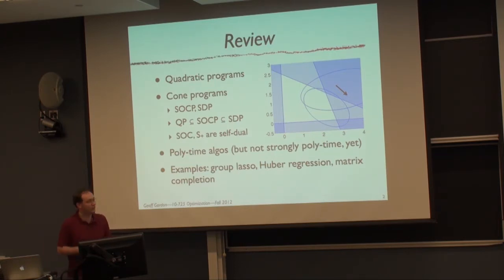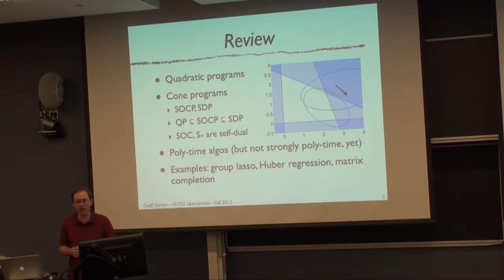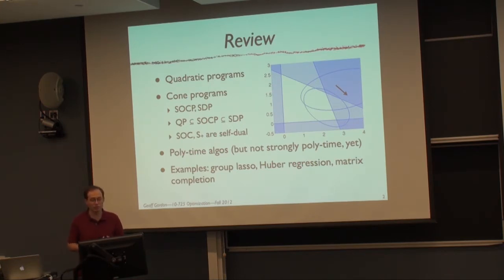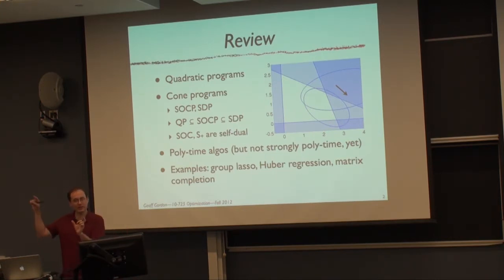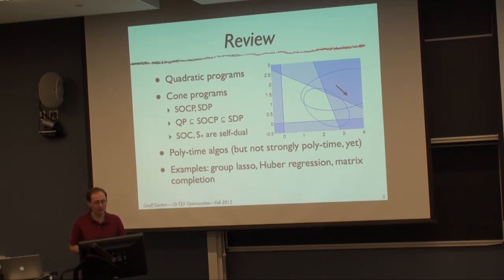We also pointed out that the second-order cone and the semi-definite cone are both self-dual, meaning the dual cone of each is just the cone itself. That makes the duality theory prettier. We went through examples including group lasso, Huber regression — a robust regression where the penalty becomes linear rather than quadratic once residuals get large enough — and matrix completion.